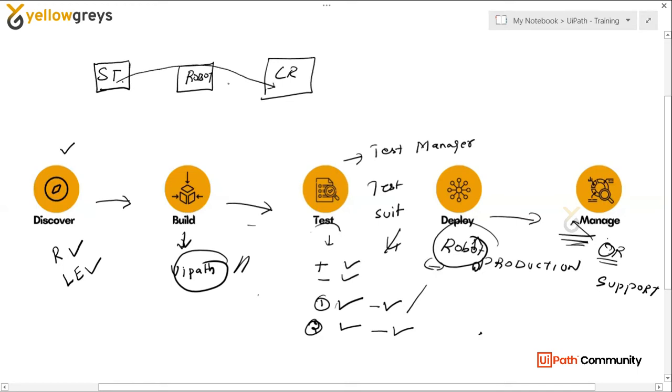When we publish it, it goes to the orchestrator. That is like a control room.